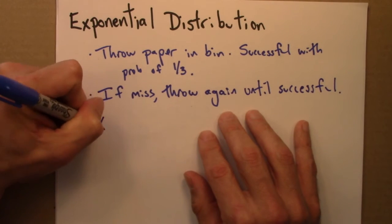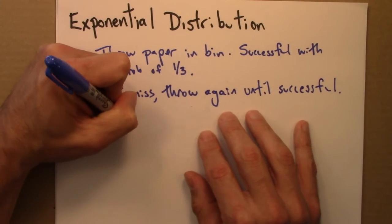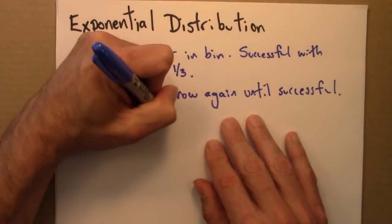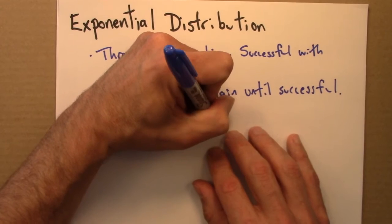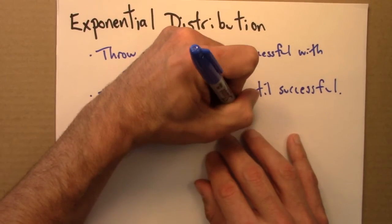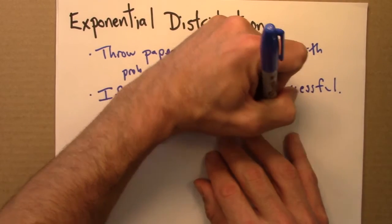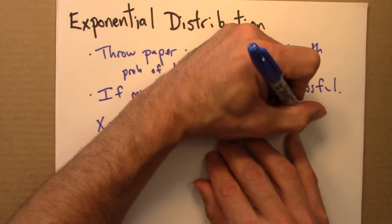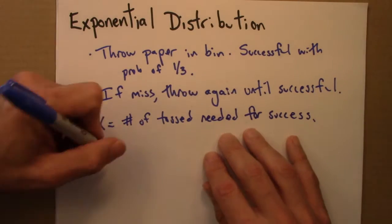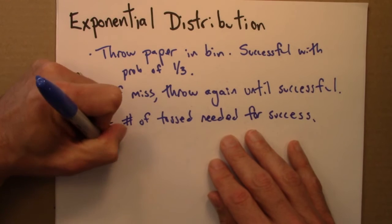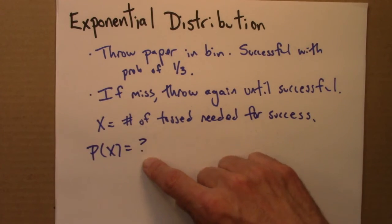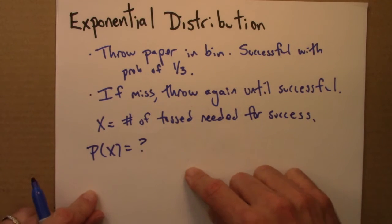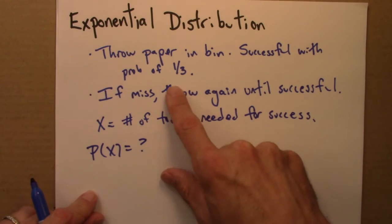So I'm going to let x be the number of tosses needed for success. And I want to know, how is x distributed? Sometimes I'm going to need only one throw. A third of the time, in fact.